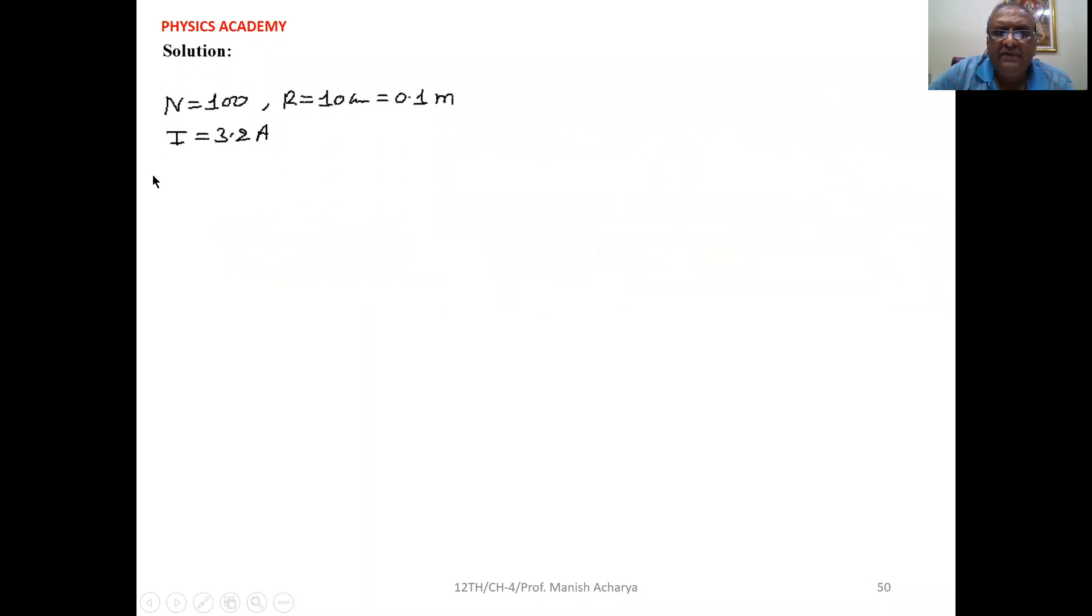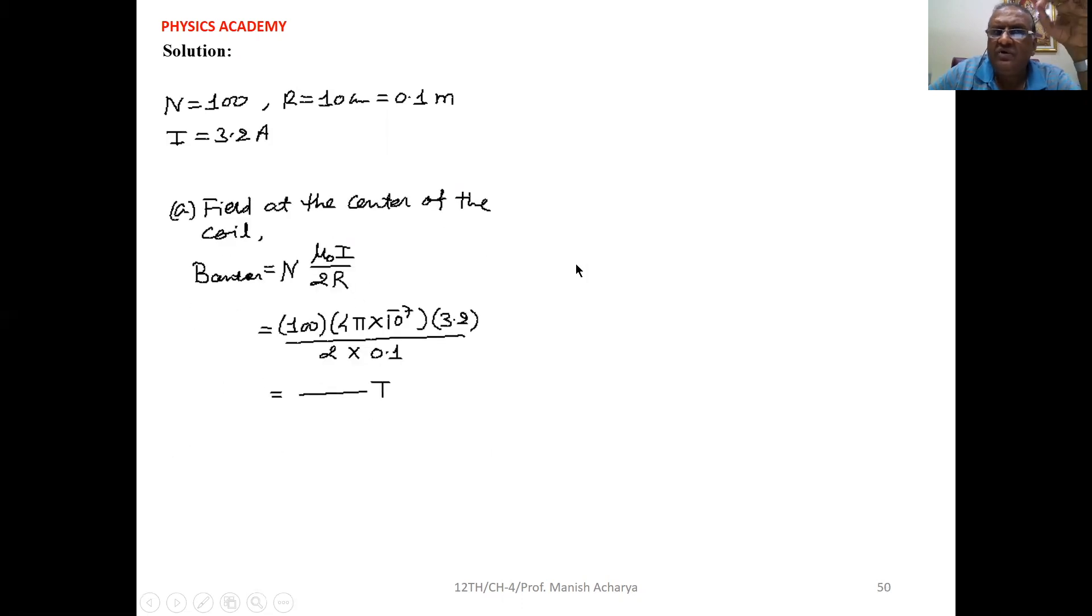Now see, number of turns in the coil is 100 given to you. Radius of the coil is 10 cm, so that is 0.1 meter. Current passed through it is 3.2 ampere. First we want to calculate the field at the center of the coil.